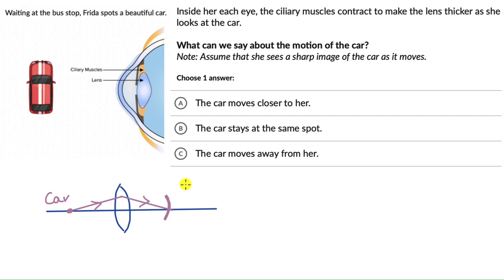But something happened and the ciliary muscles contracted, which made the lens thicker. So now the lens sort of looks like this. It's thicker.